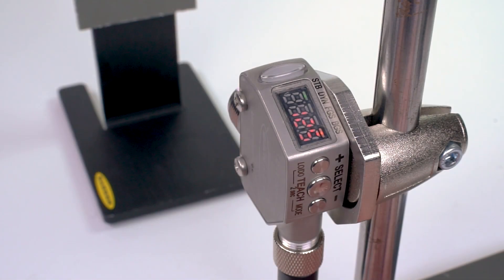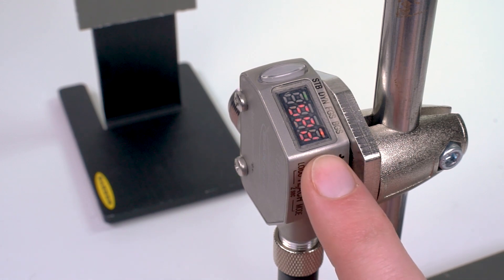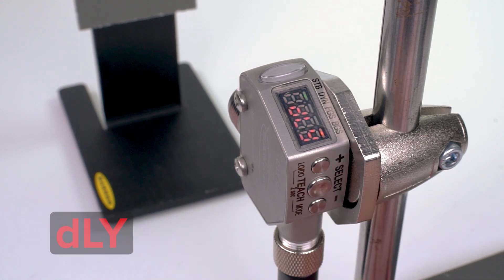Begin by pressing and holding the mode button for two or more seconds to access the setup mode menu. Use the plus and minus buttons to scroll through the options until the display shows DLY and press the select button.